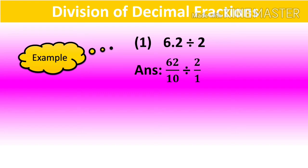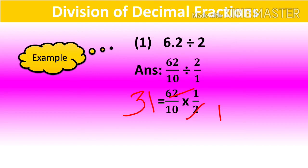2 is the denominator, so the numerator will be 1. Take the fraction 62 upon 10; divide will convert into multiply. The second fraction 2 upon 1 will become its reciprocal, 1 upon 2. Now we will cut 62 by 2: 2×1=2, 2×3=6, giving us 31 upon 10. Since 10 means one decimal place, we get the answer 3.1.